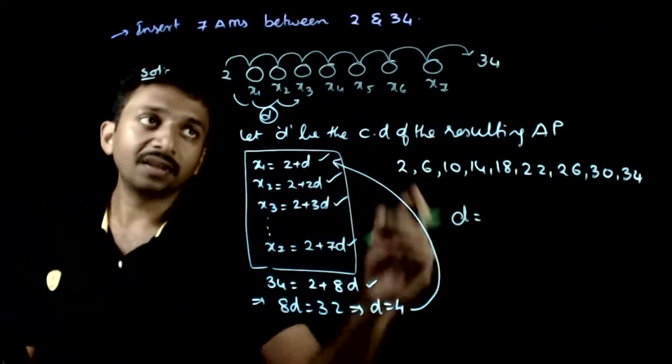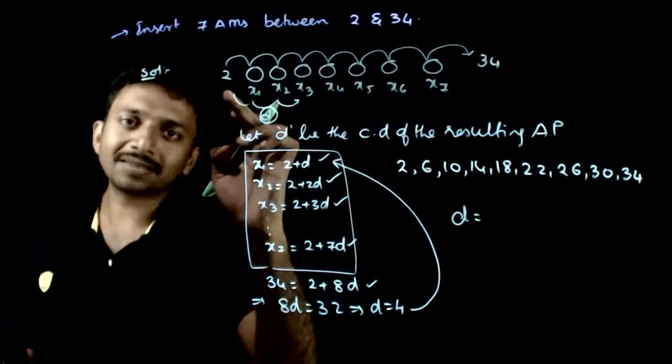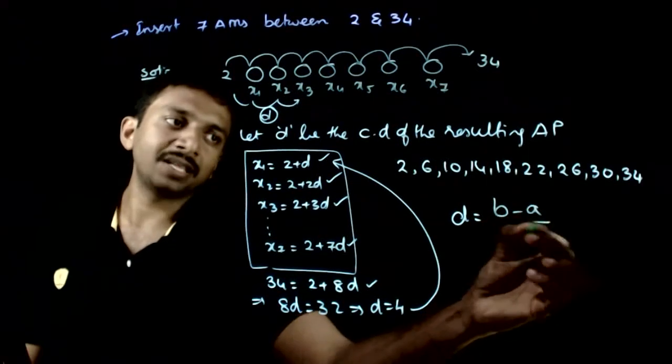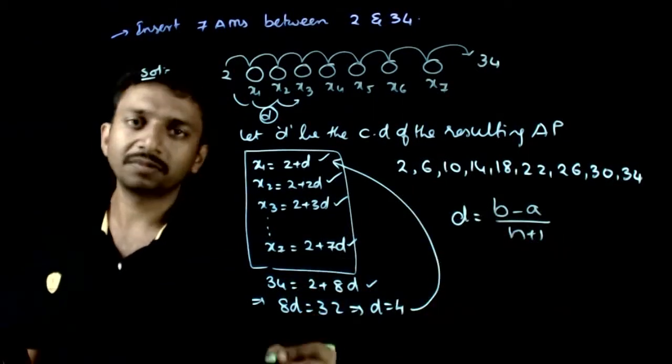The direct formula is D equals final number minus initial number by n plus 1. So D's formula is last number minus first number by n plus 1.